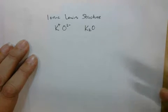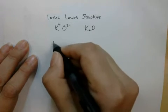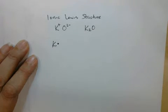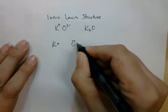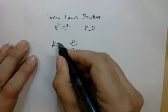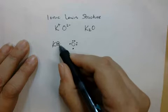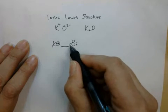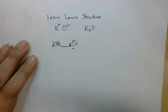Drawing out the Lewis structures of the atoms and showing what happens helps visualize why that formula works. The Lewis dot structure for potassium is easy — since it's in column one, it has one valence electron. Oxygen has six valence electrons. I draw a little circle around potassium's dot to indicate it's the electron that's moving, and you can see there's an unpaired electron — a half-empty orbital — which would be a great spot for that potassium's valence electron to land.